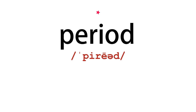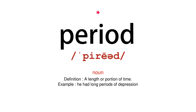Period. Noun. Definition: a length or portion of time. Example: he had long periods of depression.